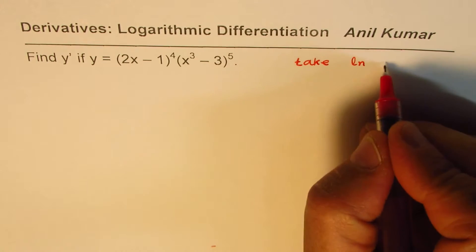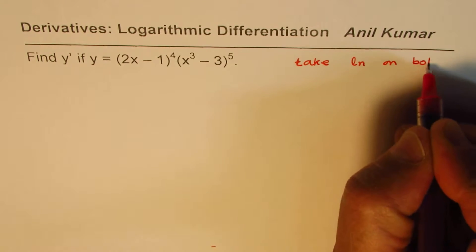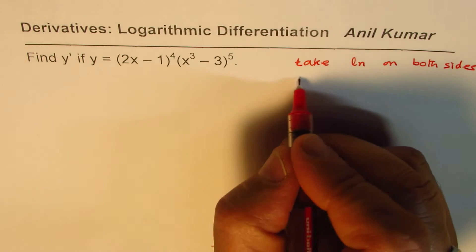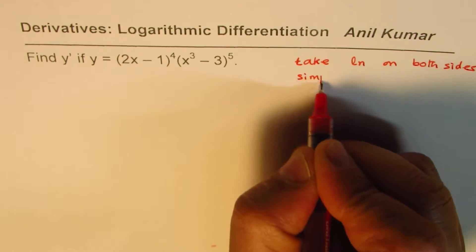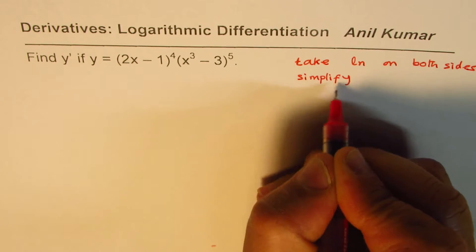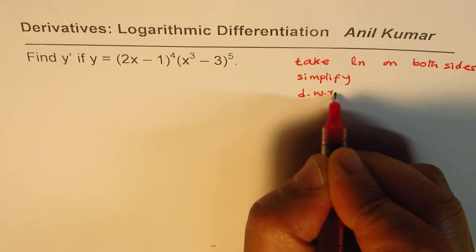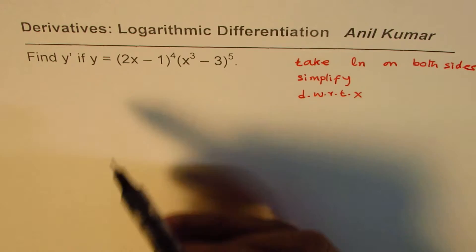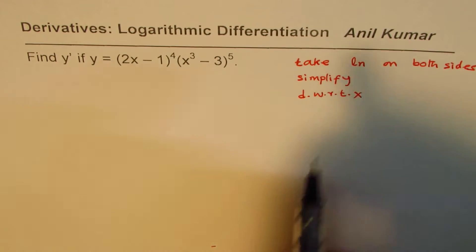So the steps here are: take logarithm, so we normally take natural log on both sides. And then the idea is to simplify and then find derivative with respect to x. These are the steps which we can follow to simplify our solution. Let me show you how.